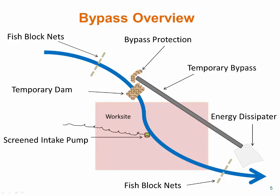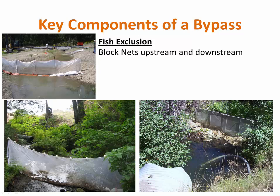The first step is typically installation of the fish block nets. Metal screen panels or mesh nets are installed upstream and downstream to form physical barriers to exclude fish from the work area. Care must be taken to install the barriers in a manner that prevents undue risk or harm to fish. For example, screen panels placed perpendicular to swift flowing water pose an impingement risk to fish.